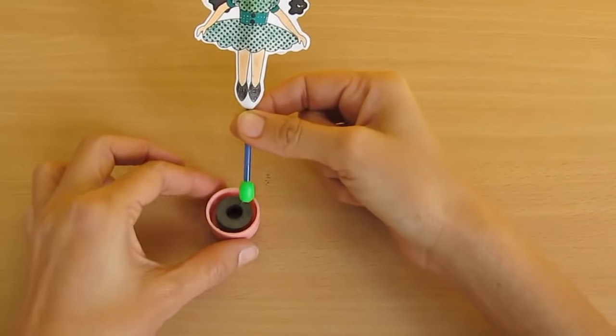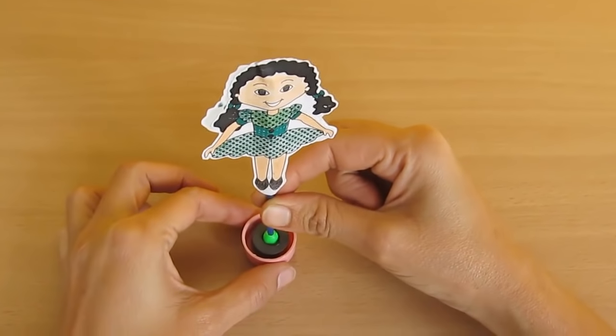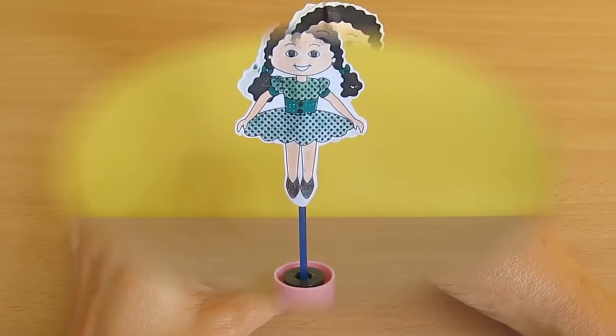Insert a bead at the other end of the refill and stick it inside the ring magnets.